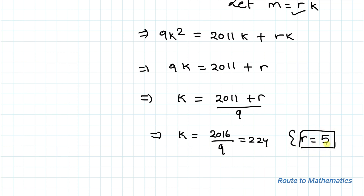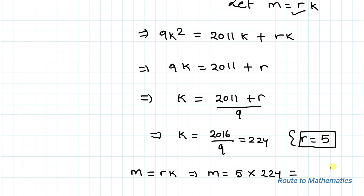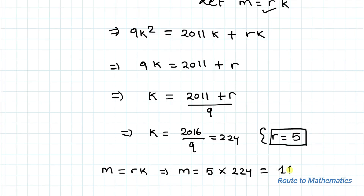The smallest possible value of r is 5. Since m equals rk, we have m equals 5 times 224, which equals 1120. That is our answer. I hope you have understood the solution. Thanks for watching — please subscribe to my channel and click the bell icon for more interesting videos.